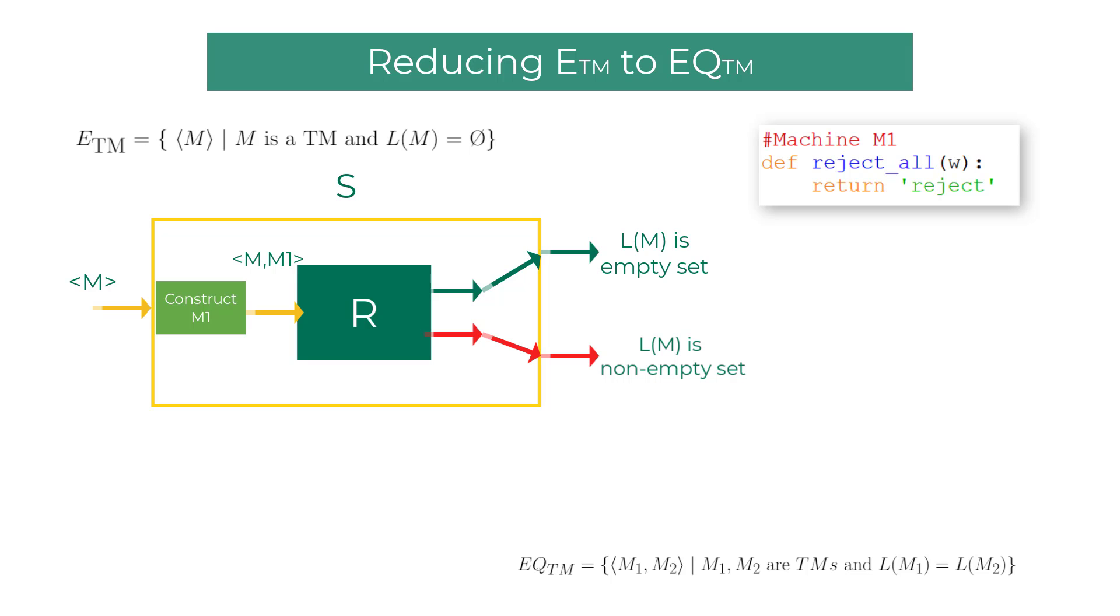With the help of a decider for EQTM, we were able to build a decider for ETM, which was already proven as an undecidable language. Hence, the decider for EQTM should not exist.